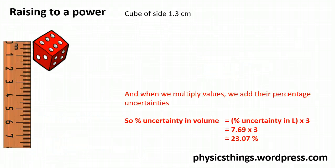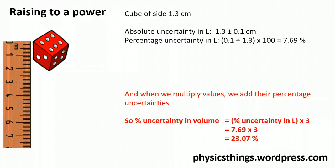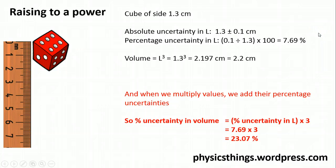Finally, let's look at raising to a power. Imagine working out the volume of a cube with sides of length 1.3 cm. The absolute uncertainty in the length is ±0.1 cm (the precision of the ruler). The percentage uncertainty in L is therefore (0.1 ÷ 1.3) × 100 = 7.69%. Finding the volume (L³) gives 2.2 cm³, keeping to the same number of decimal places.